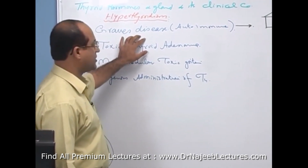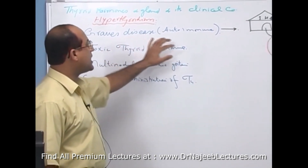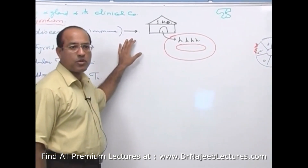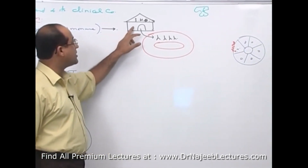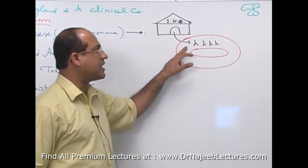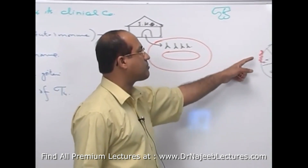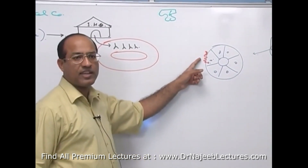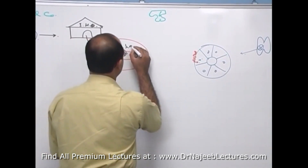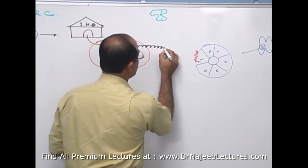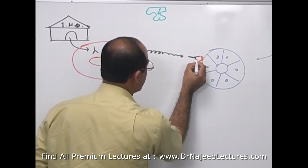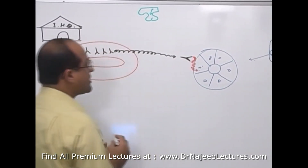Graves' disease is an autoimmune disease which is more common in females. The immune system produces autoantibodies which are directed against the TSH receptors of the follicular cells. These autoantibodies attack the TSH receptors.